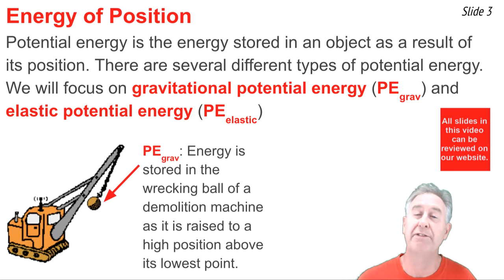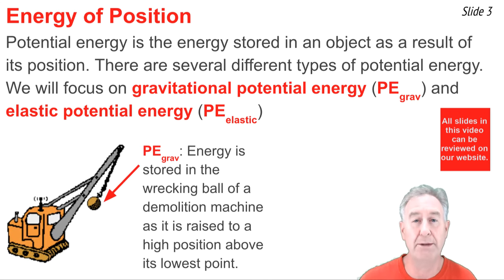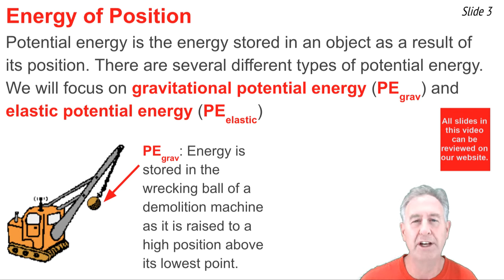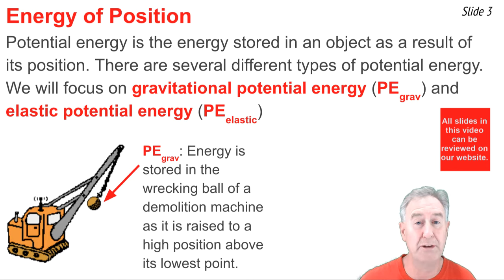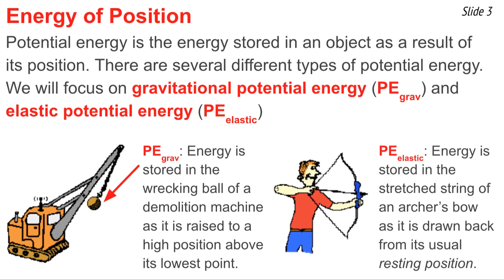As an example of gravitational potential energy, consider the wrecking ball of a demolition machine raised high above its lowest position. Because of the position of the ball relative to Earth's gravitational field, it has stored energy of position — gravitational potential energy. As an example of elastic potential energy, consider the stretched bowstring of a bow and arrow set. Because of the position of the string relative to its usual resting position, it possesses elastic potential energy.